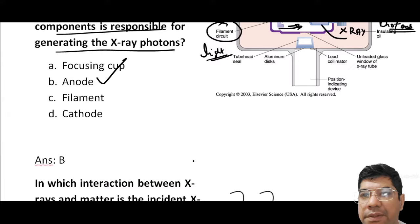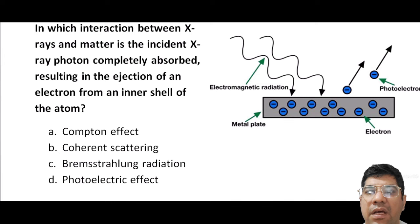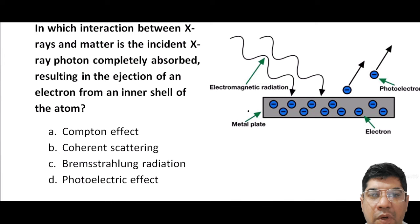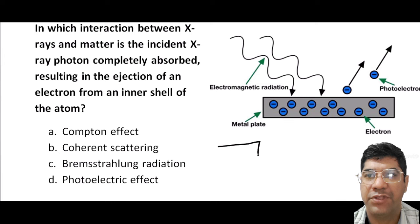Moving to the next question: in which interaction between x-ray and matter is the incident x-ray photon completely absorbed, resulting in ejection of an electron from the inner shell of an atom? The answer is the photoelectric effect. Imagine you have a small closed box with a tiny window, and inside the box there is a bouncing ball.